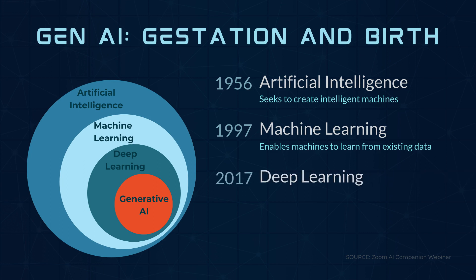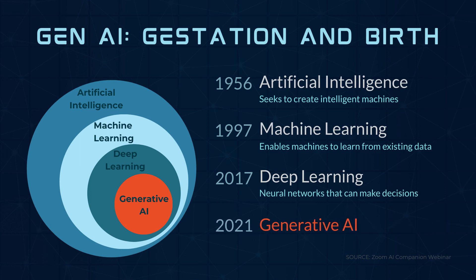Next, we have deep learning, which is a machine learning technique in which layers of neural networks are used to process data and make decisions. Which brings us now to generative AI, a model that can create new written, visual, and auditory content given prompts or existing data.